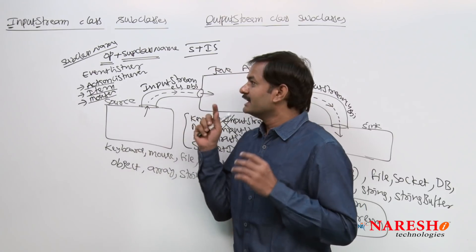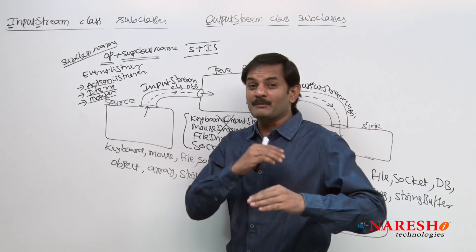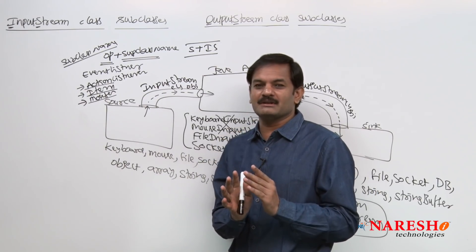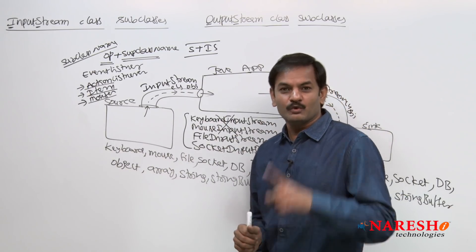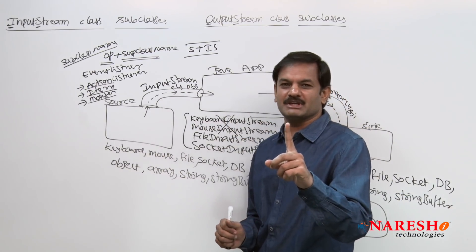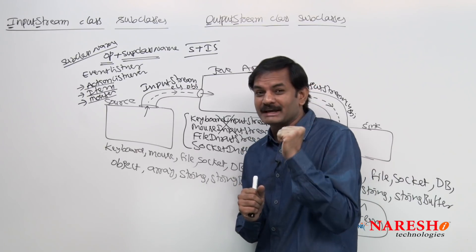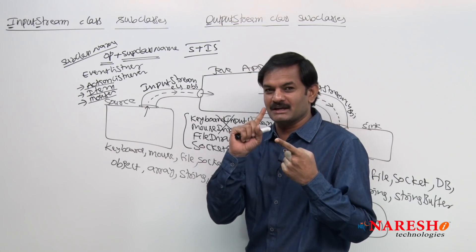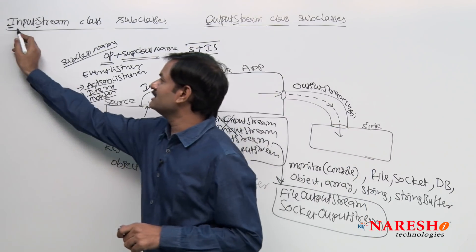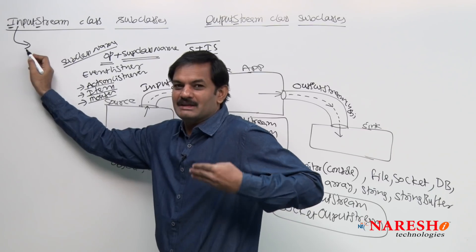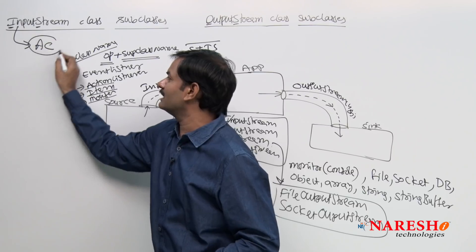Please listen to this statement. Input stream is providing totally 9 operations, meaning 9 methods. Among these 9 methods, 8 methods' implementation logic is common to all different sources. Only one operation's implementation is changing — this is the read operation. Then input stream should be what type of super class? Is it an interface, abstract class, or concrete class? Input stream has some operations implemented and some operations declared — then it is abstract class.